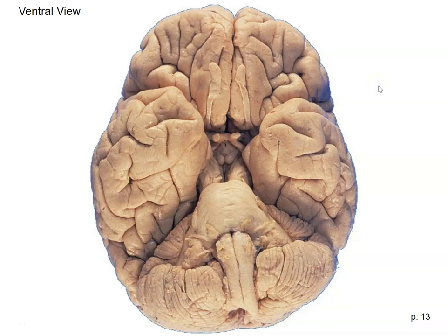Today we're going to look at structures on the ventral and mid-sagittal view of the human brain. You've already seen these views on the sheep brain, so I'd encourage you to flip back and forth between the sheep brain pages and the corresponding human brain pages. Please speak out loud as we go — it really helps you learn the names of these structures. Break out your sheep brain packet, turn to the ventral view of the human brain, and get at least three differently colored highlighters and a pencil or pen.